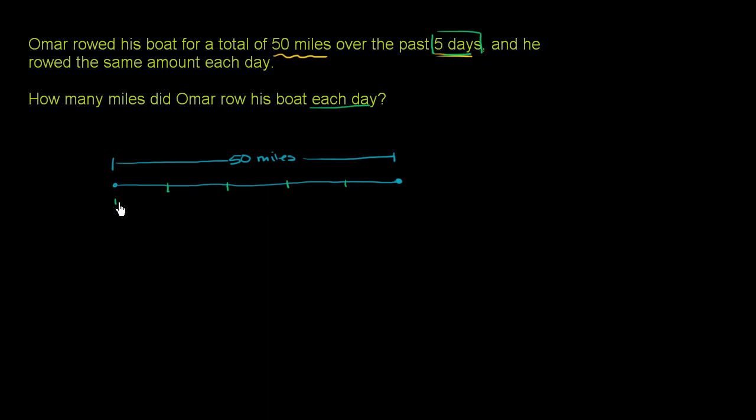So essentially, we want to figure out what is one of these distances. And as you can see visually, this is really just taking our 50 miles and dividing it into five equal chunks.